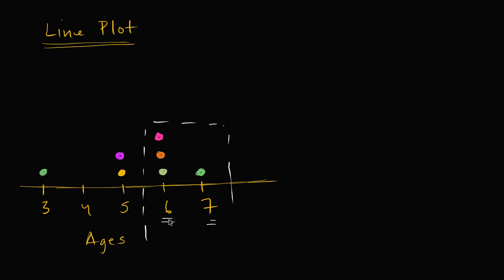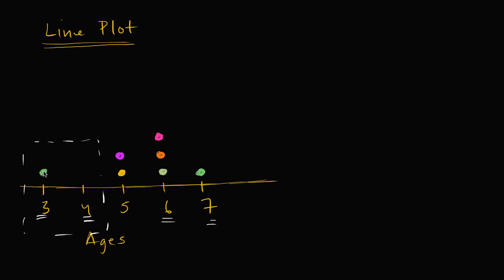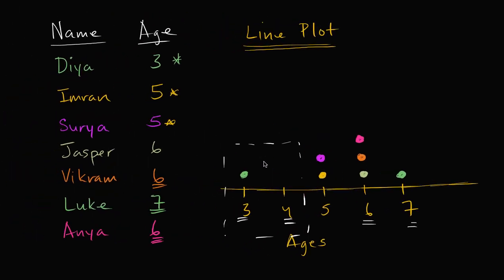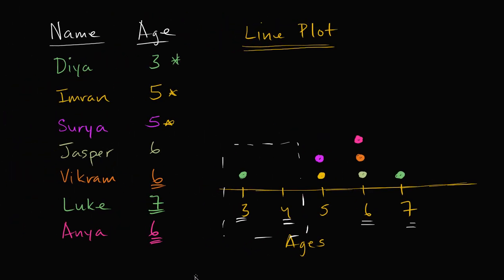You could go the other way around. How many people are less than five years old? Less than five years old would be either three years old or four years old. When you look at those dots, you see there's only one dot — only one person attending the party is less than five years old. Hopefully you found that interesting.